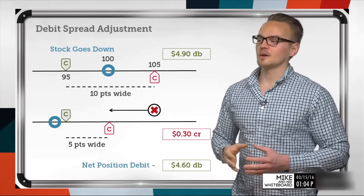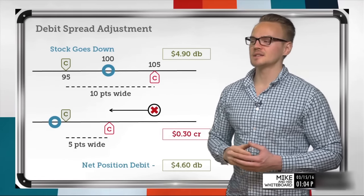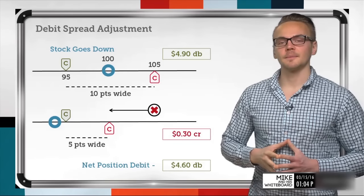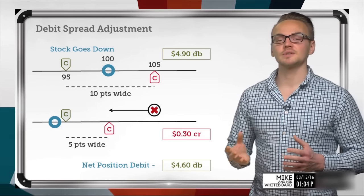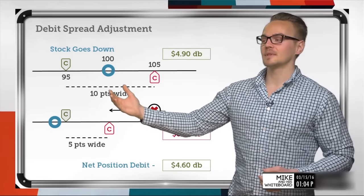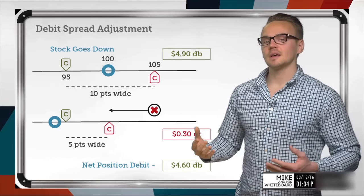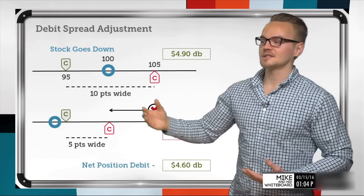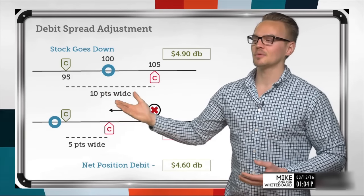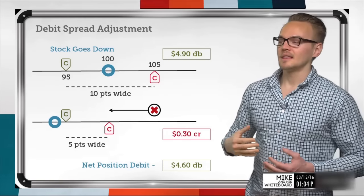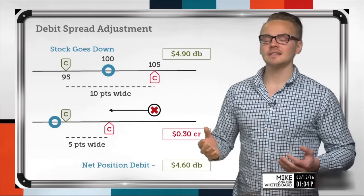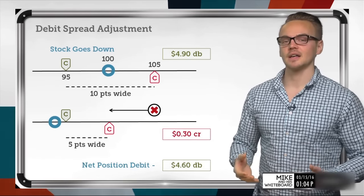The important thing to consider when adjusting this spread is understanding that I have a 10-point wide spread. If I'm long a call spread, I know I'm bullish. The best case scenario is that the stock price goes above the short call, which leaves me with a max profit of $5.10 at expiration. I calculate that by knowing the spread is 10 points wide, so I can sell the spread for about $10. Since I bought it for $4.90, the difference gives me that $5.10 max profit.